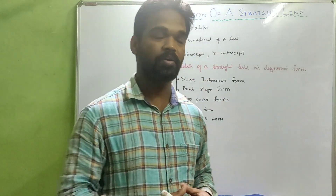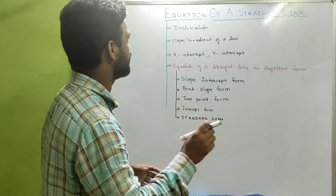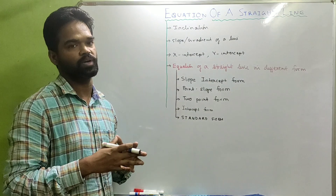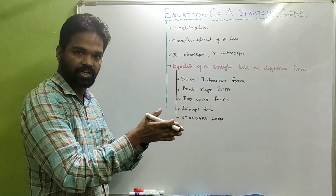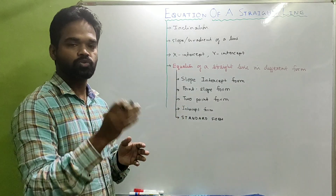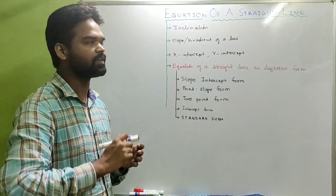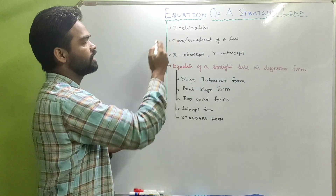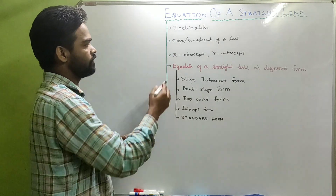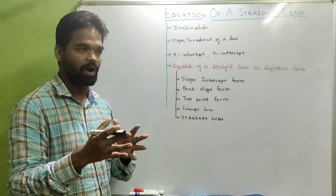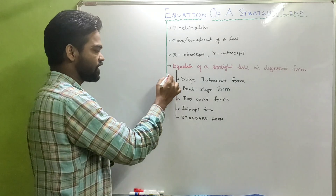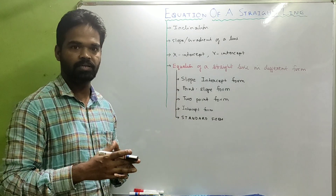Today our topic of discussion is the equation of a straight line. There are so many things in straight lines — whatever we study in Class 10 carries forward to Class 11 and 12. We'll talk about inclination, slope or gradient of a line, x-intercept and y-intercept, and the equation of a straight line in different forms.